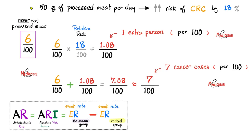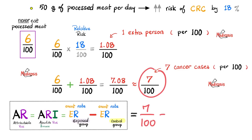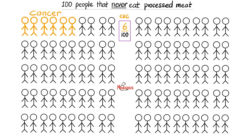Can we calculate the attributable risk, i.e. the absolute risk increase? Sure. This equals the event rate in the exposed group — exposed to processed meat — minus the event rate in the control group, which did not consume processed meat. In biostatistics, always start with the big number and subtract the small number to get a positive result. So: 7 in 100 minus 6 in 100 equals 1 in 100, which is 1%. This is the absolute risk increase caused by eating processed meat.